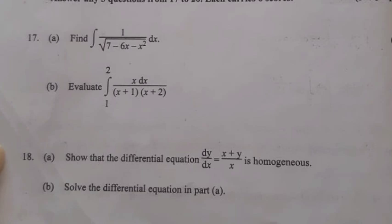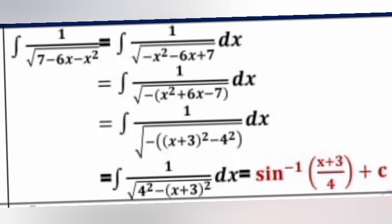Question 17A: Find ∫ 1/√(7 - 6x - x²) dx. Answer: ∫ 1/√(-(x² + 6x - 7)) dx = ∫ 1/√(-(x+3)² + 4²) dx = ∫ 1/√(4² - (x+3)²) dx = sin⁻¹((x+3)/4) + c.